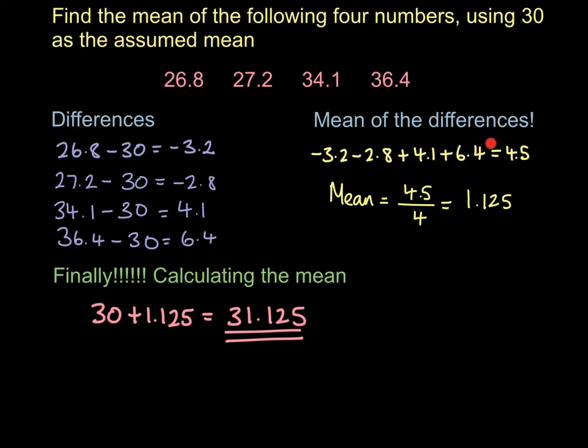Your next step then is to find the mean of those differences. So we added those four numbers together to get 4.5, and we divided that by 4 to get the mean of those four numbers. And then finally, to calculate the mean, you add that value onto your guess.